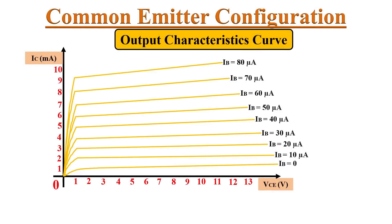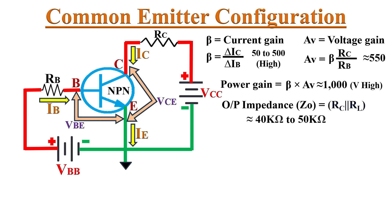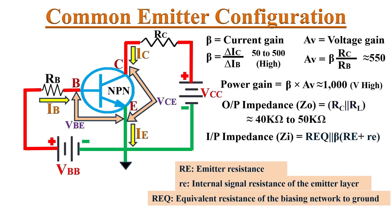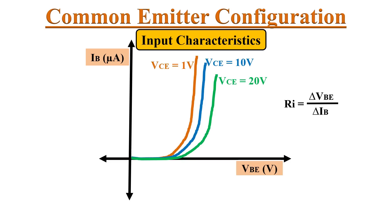The high output impedance can be observed because the collector curves in the output characteristic curve are not perfectly horizontal. For input impedance, the formula is ZIN equals REQ in parallel with (beta times capital RE plus small re), where REQ is the equivalent resistance of the biasing network to ground, capital RE is emitter resistance, and small re is the internal signal resistance of the emitter layer. The typical range is 100 Ω to 6 kΩ, so this circuit offers low input impedance. Input resistance can be found by the slope of the input characteristic curve: RI equals delta VBE divided by delta IB.